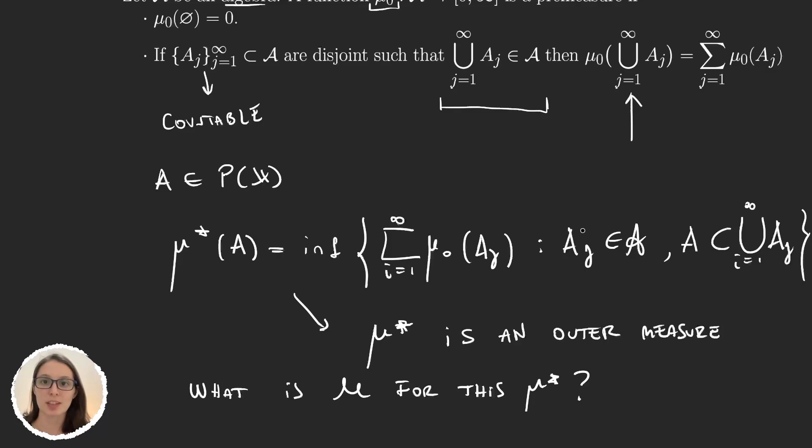This is where we left off in our last video. We learned what premeasures were, and we saw that with this formula we could get outer measures from premeasures. That was great because we know how to get measures from outer measures. So now essentially we know how to get measures from premeasures.